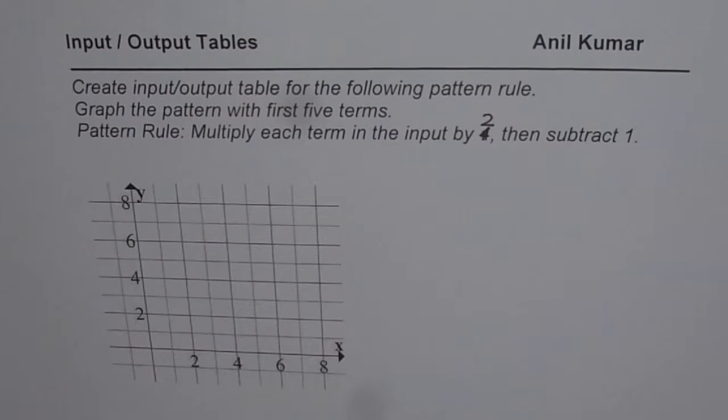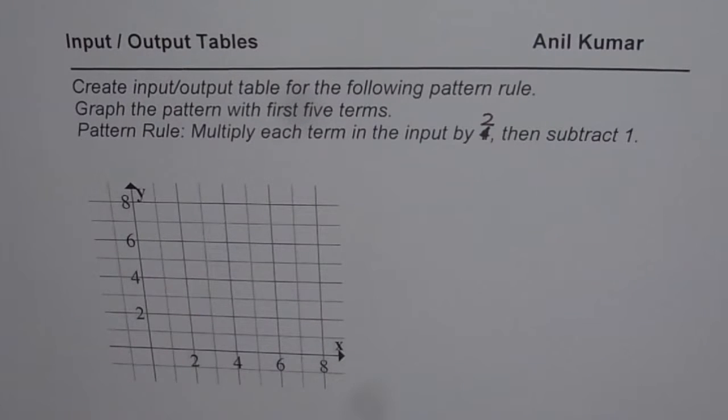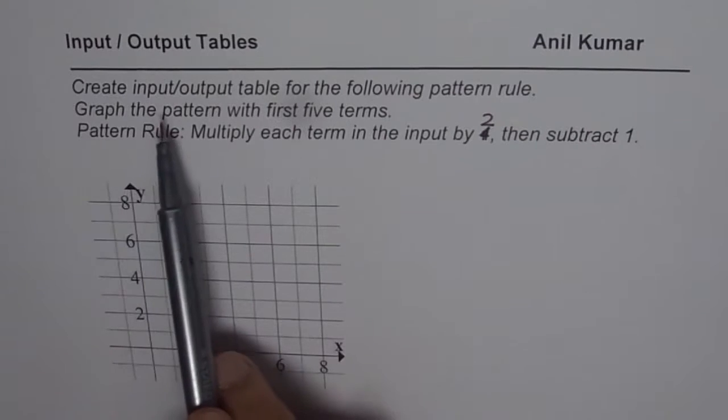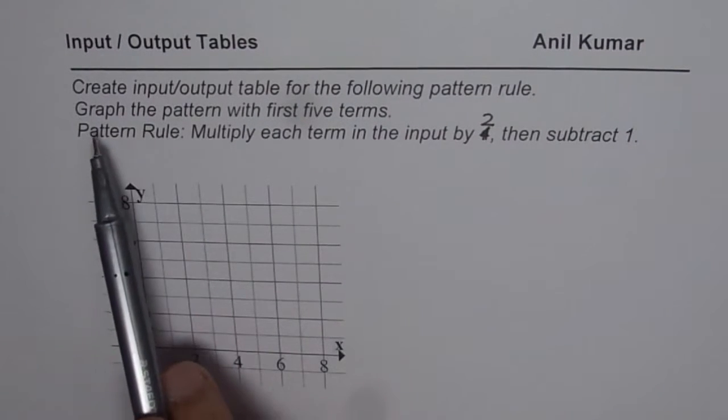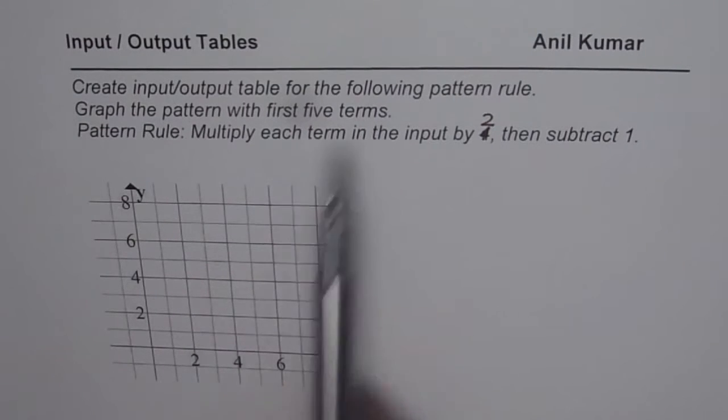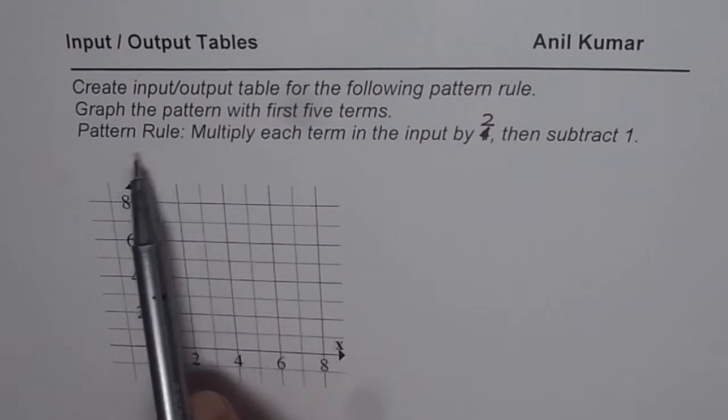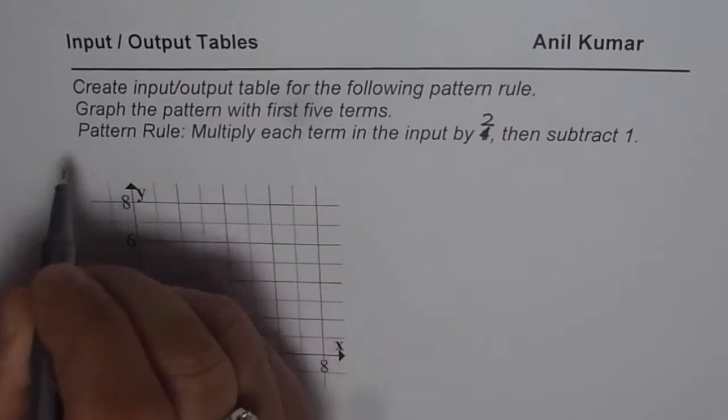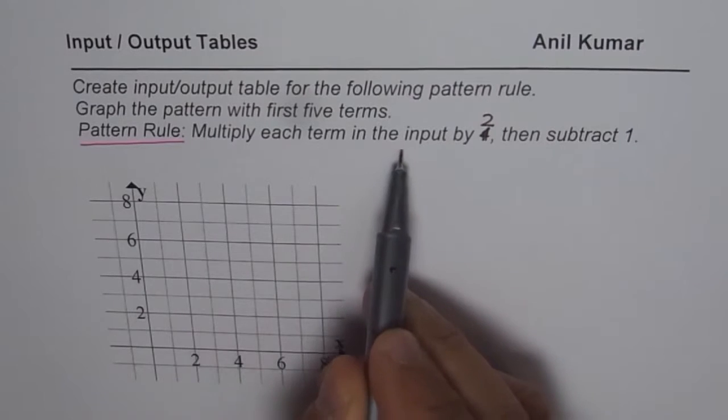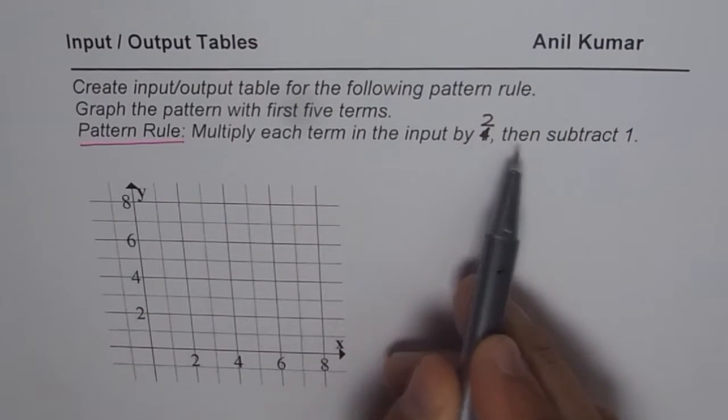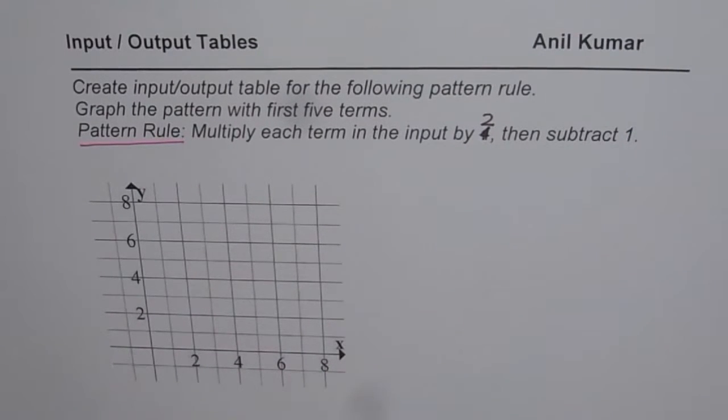I'm Anil Kumar and in this video we will connect input output tables with the pattern rule and graph. The question here is create input output table for the following pattern rule, graph the pattern with first five terms. The pattern rule is, let me underline this, multiply each term in the input by 2 then subtract 1. So that is the pattern rule for you.